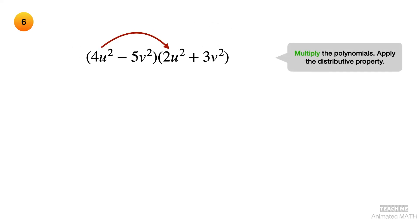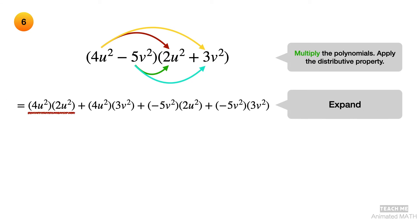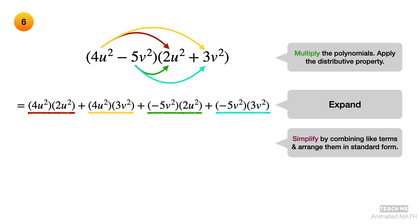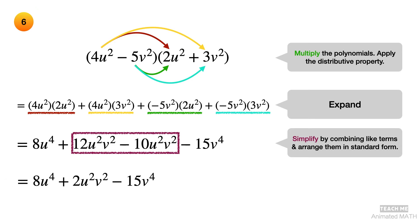Apply the distributive property when you multiply the polynomials. Expand the product — each colored arrow is matched with an underline of the same color. Simplify the polynomial product by combining like terms and arrange in standard form. The final answer is 8u raised to the 4th plus 2u squared v squared minus 15v raised to the 4th.